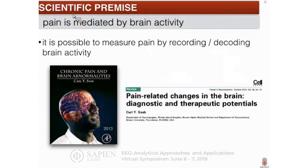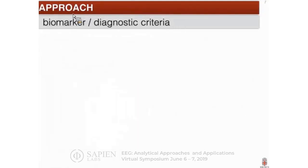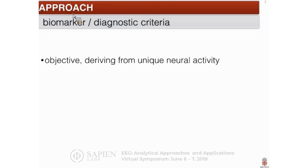In the lab, we have adopted the premise that pain is mediated by brain activity. If you accept this premise, then it becomes reasonable to suggest that it is possible to measure pain by recording and decoding brain activity. We honed in on EEG as a potential biomarker. Speaking with stakeholders in pain research — including NIH, FDA, and basic scientists — it turns out each has its own preferred definition of what a biomarker is. So we came up with a set of criteria that worked for us: the biomarker needs to be objective, empirical, and derive from unique neural activity, because we believe pain is mediated by brain activity first and foremost.